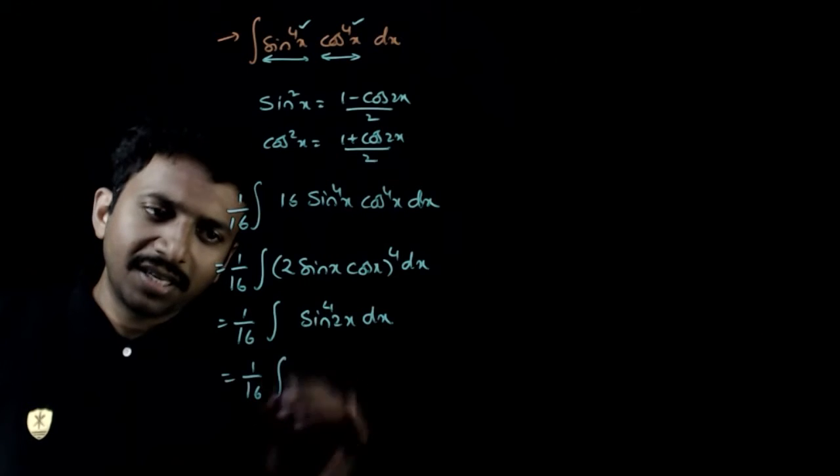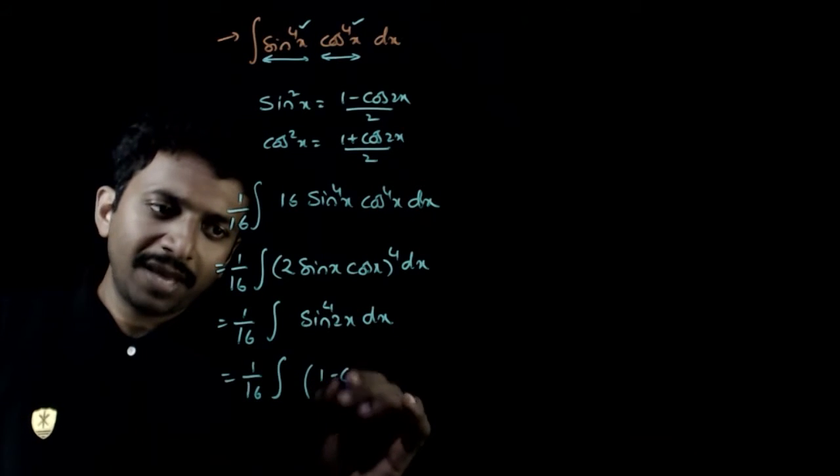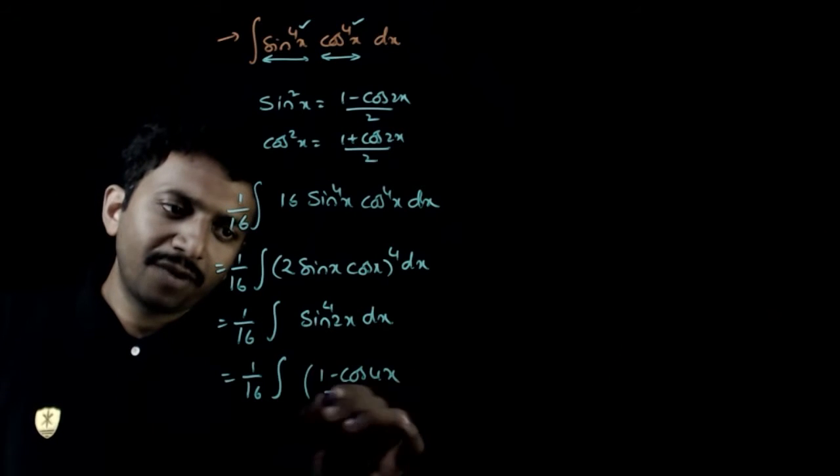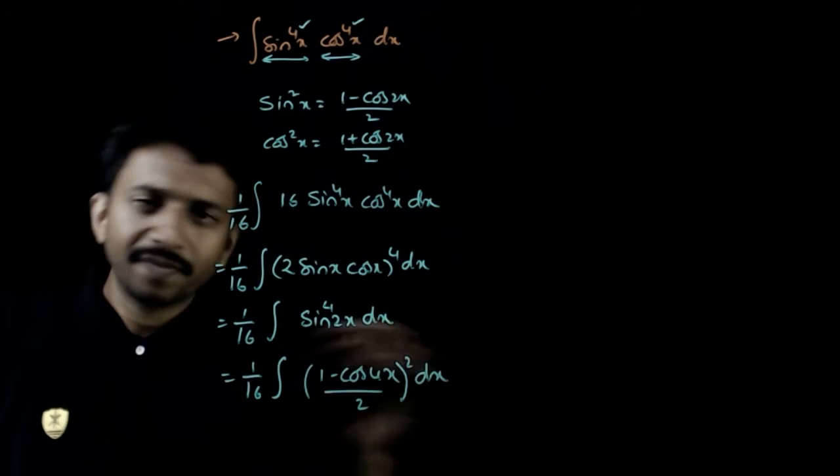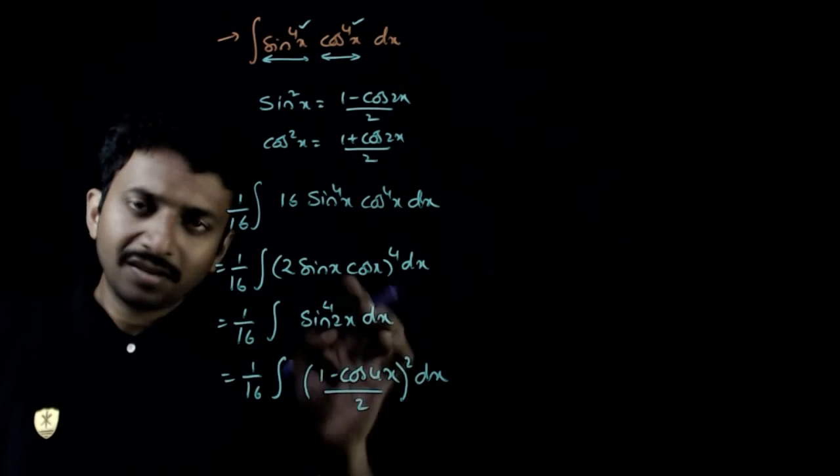Now I will use something like this, integration of sin square 2x can be written as 1 minus cos 4x by 2 ka whole square dx.